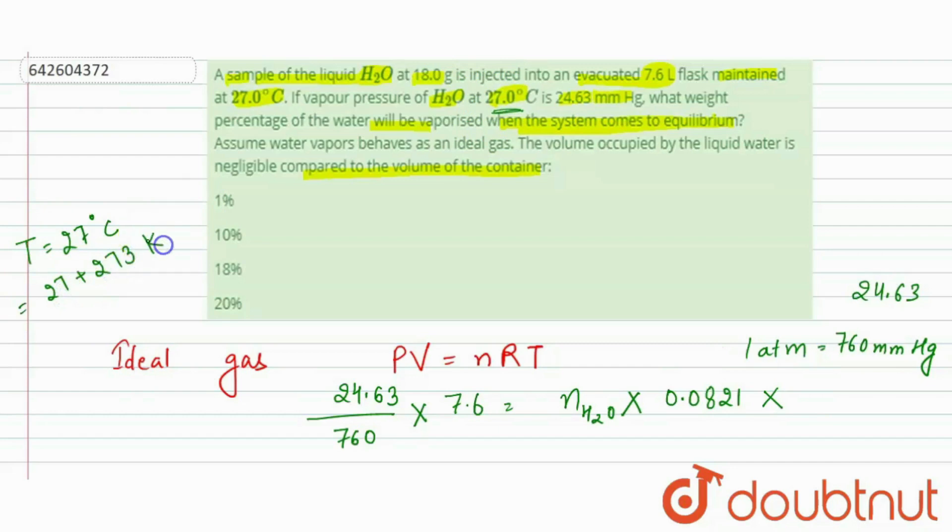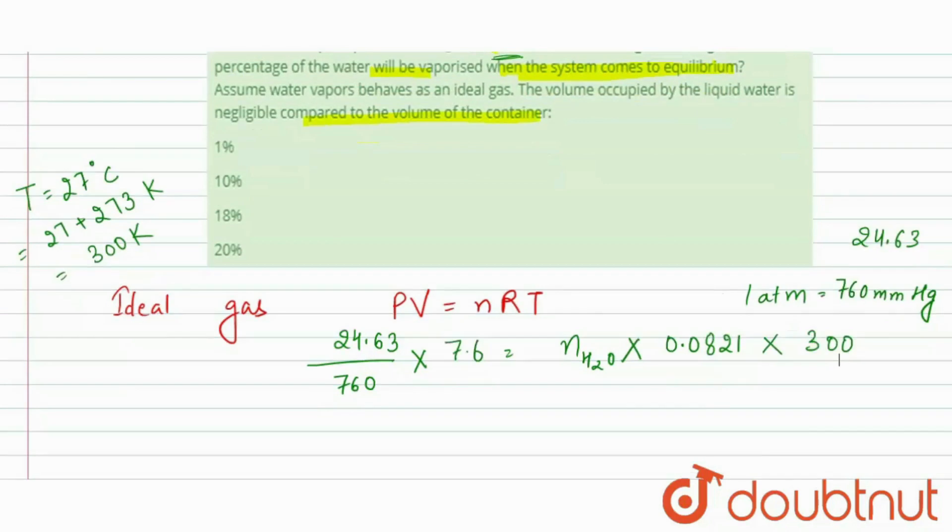We need to take it in the kelvins. 27 degrees Celsius is equal to 27 plus 273 kelvin is equal to 300 kelvin. So here it will be 300. So now we will calculate the number of moles.